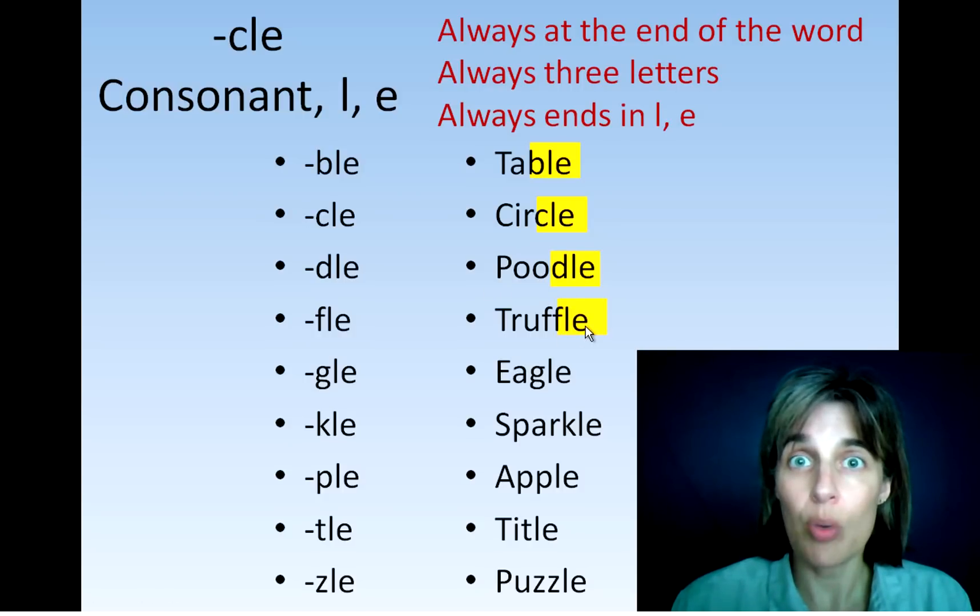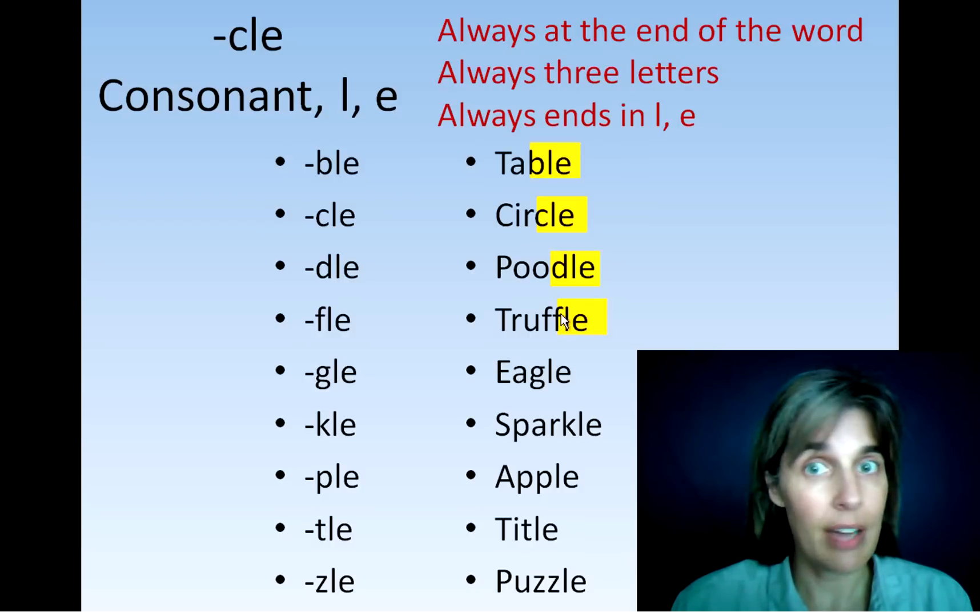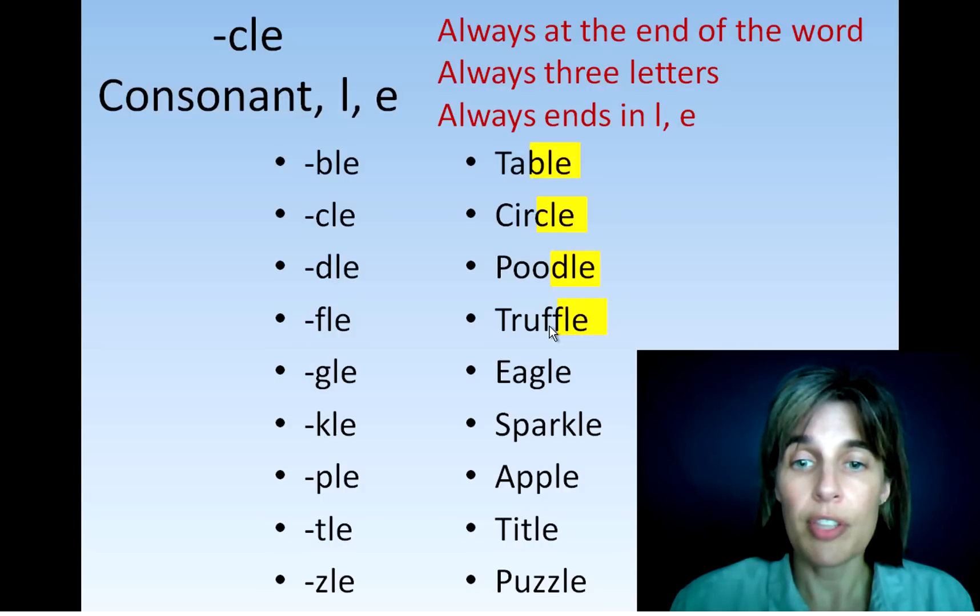Now remember, it's always three letters. So you know the consonant L-E is a consonant, which is any letter not a vowel, an L and an E. So now that we know that this is what we highlight, we know that this is going to be a closed syllable. Truffle.